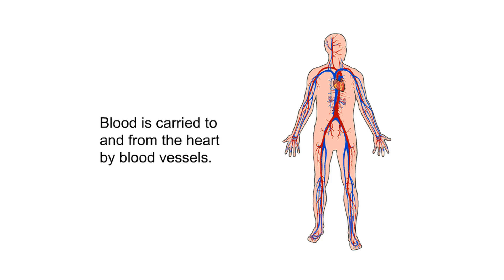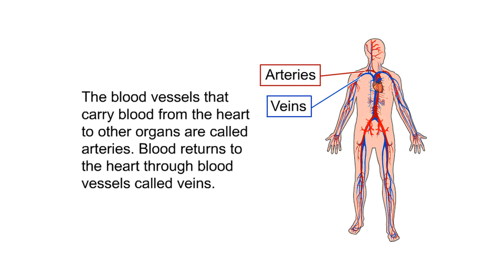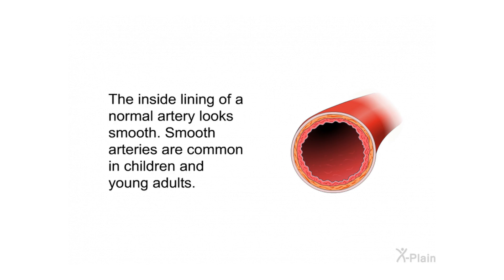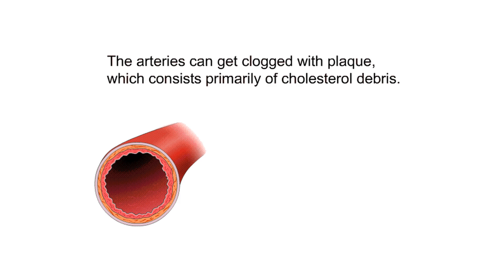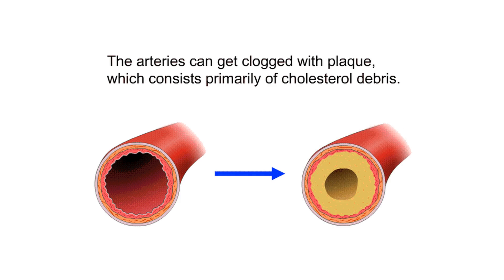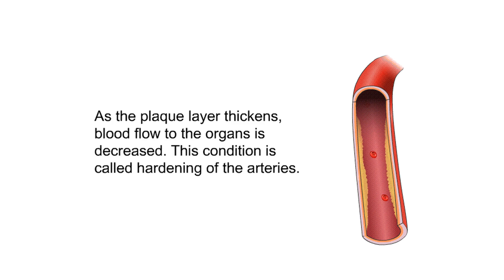Anatomy. Blood is carried to and from the heart by blood vessels. The blood vessels that carry blood from the heart to other organs are called arteries; blood returns to the heart through blood vessels called veins. The inside lining of a normal artery looks smooth. Smooth arteries are common in children and young adults. The arteries can get clogged with plaque, which consists primarily of cholesterol debris. As the plaque layer thickens, blood flow to the organs is decreased. This condition is called hardening of the arteries.